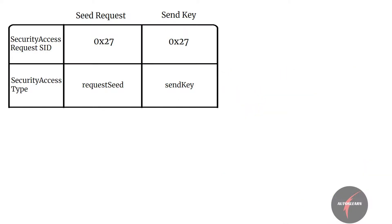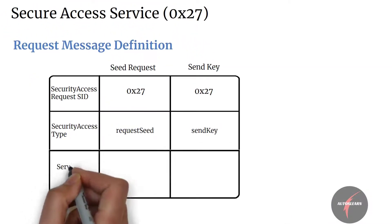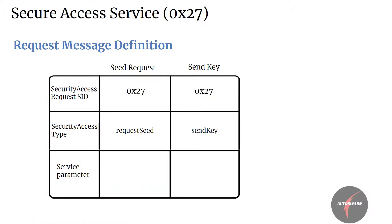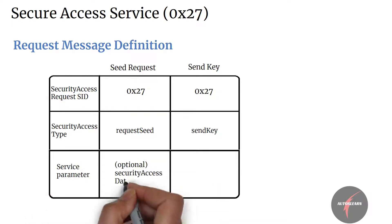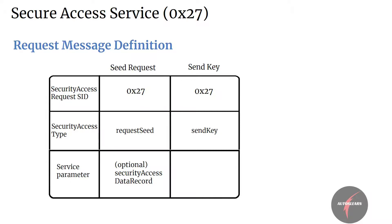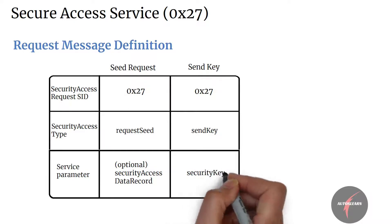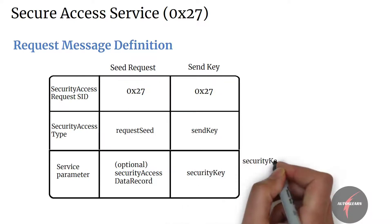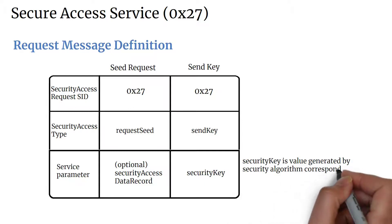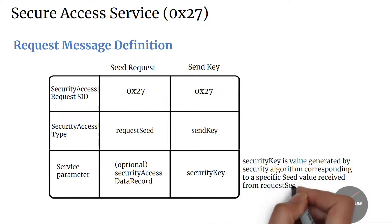Now let's jump to the next parameter of the service. In case of request seed, we have the security access data record, which is an optional user data that can be transmitted to the server when requesting the seed information. For send key, we have the security key, which is the value generated by the security algorithm corresponding to a specific seed value received from the request seed service.